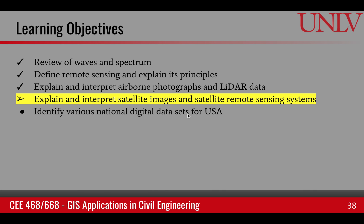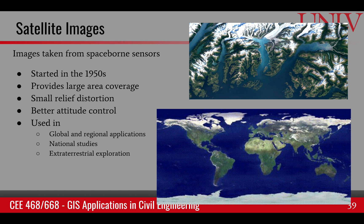This learning objective explains satellite images and the Landsat remote sensing platform. Satellite images are images taken from space-borne sensors. This started in the 1950s when early satellites were launched — originally mostly weather satellites or military reconnaissance satellites. Later on in the 1960s and 70s, commercial satellites started appearing as well, providing data for commercial use.